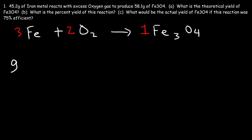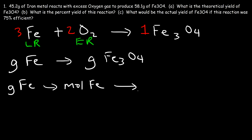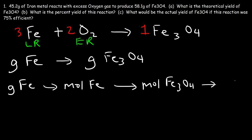We need to convert the grams of Fe — that's the limiting reactant — to the grams of Fe3O4. O2 is the excess reactant. To convert the grams of one substance into the grams of another substance, it's a three-step process. We start with the grams of Fe and convert to moles of Fe using the molar mass. In the second step we use the molar ratio to convert from moles of Fe to moles of Fe3O4. In the last step we convert to grams of Fe3O4 using the molar mass again.